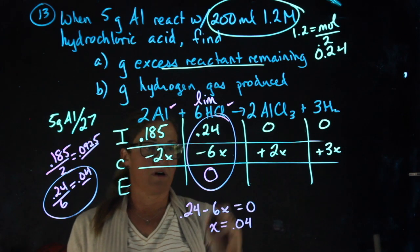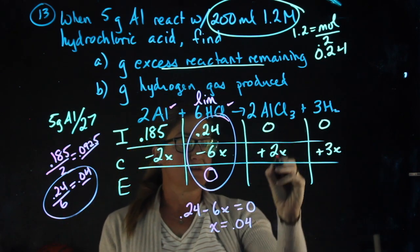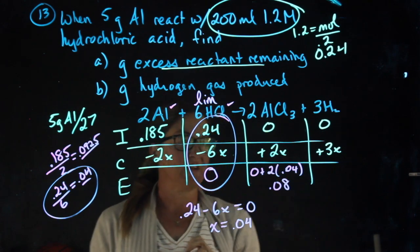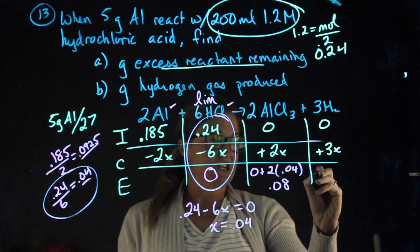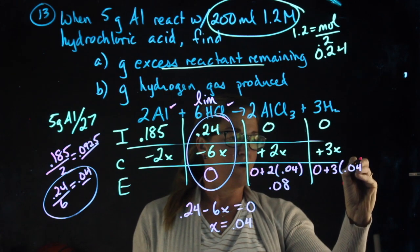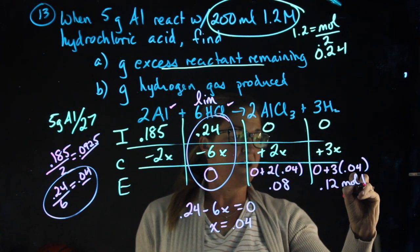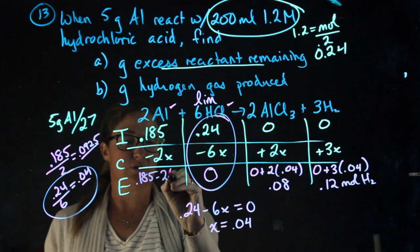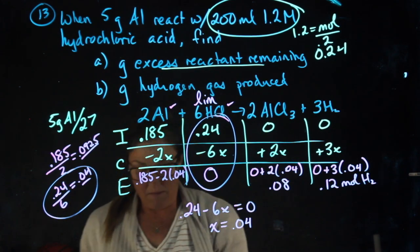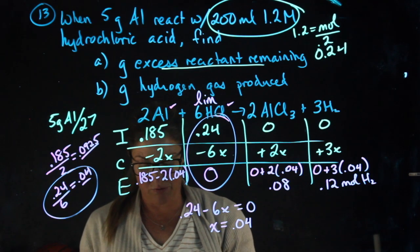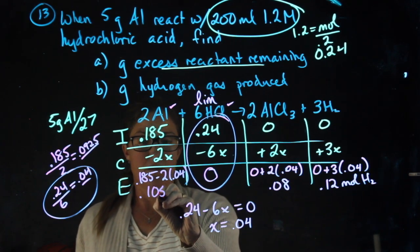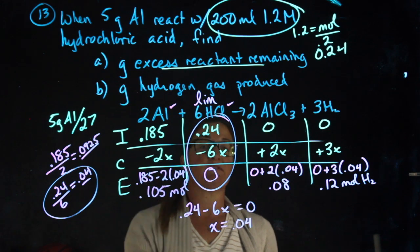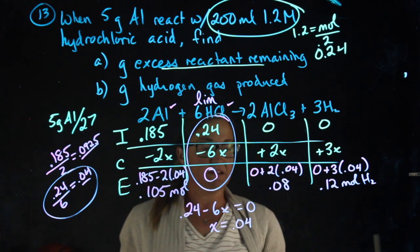Now that I know x is 0.04, I can plug it into each of these other places. 0 plus 2 times 0.04 gives me 0.08 moles of HCl. Hydrogen: 0 plus 3 times 0.04 gives me 0.12 moles of hydrogen. For my leftover aluminum, I need to do 0.185 minus 2 times 0.04, which leaves me with 0.105 moles of aluminum. If I got a negative number here, I would have known I picked the wrong limiting reactant. And since I didn't, I know I did it correctly.